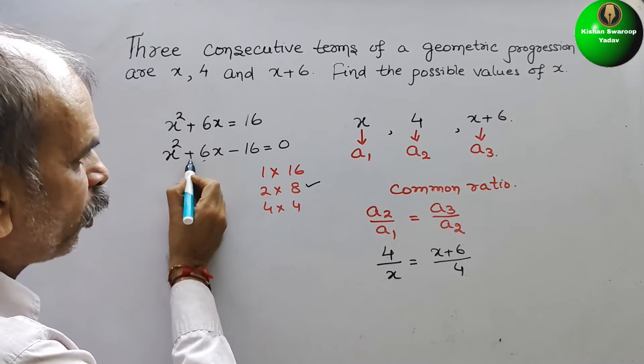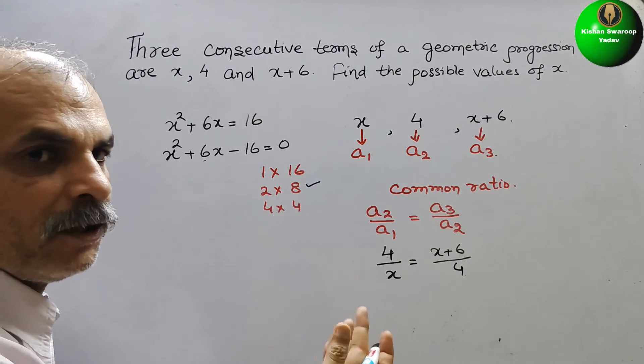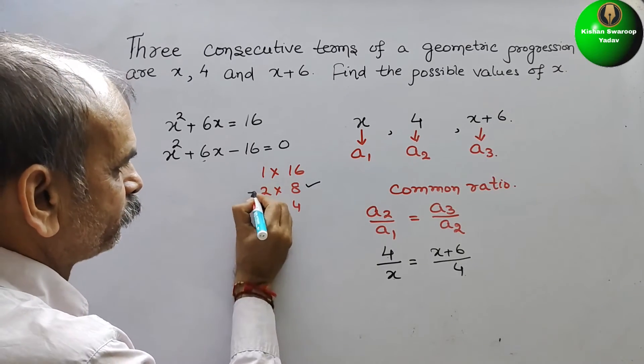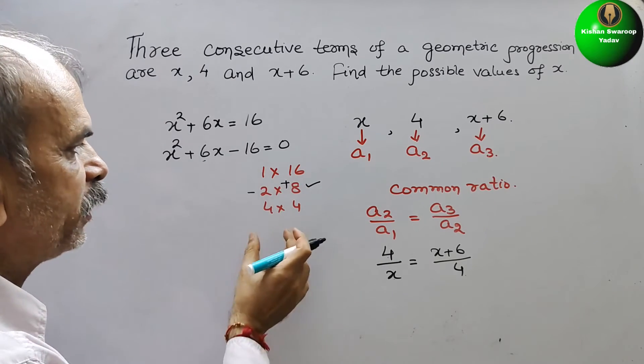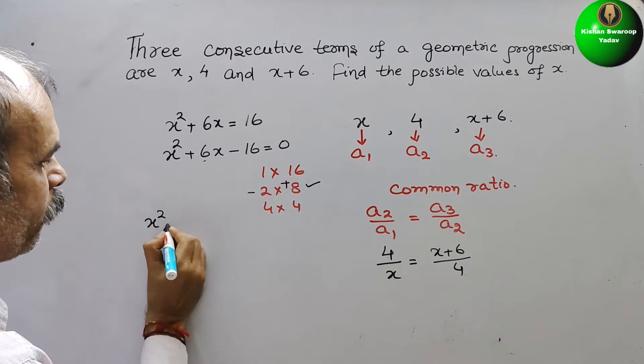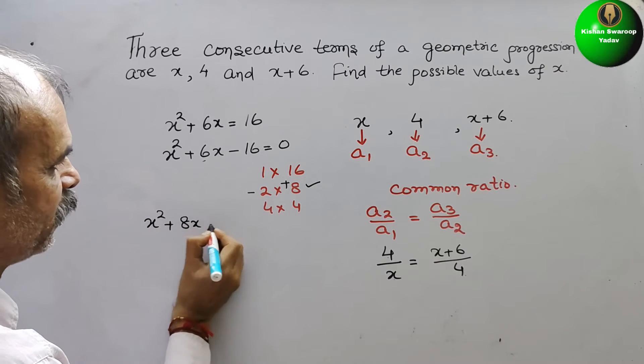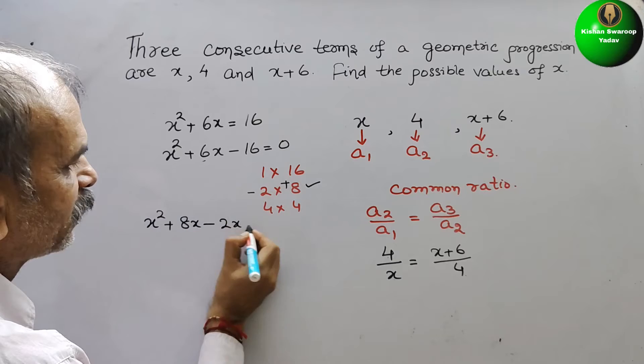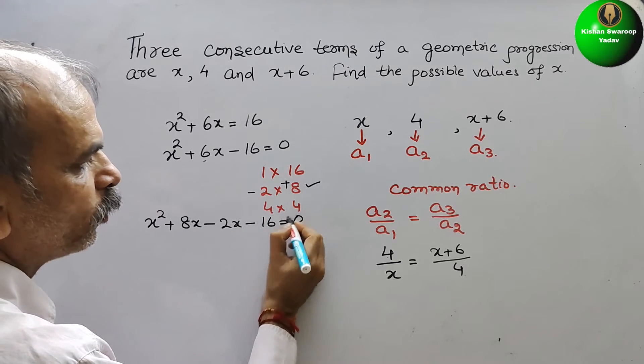Here the sign is positive. That means 8 is positive, 2 is negative. So just substitute this as the middle term. It will be x squared plus 8x minus 2x minus 16 equals 0.